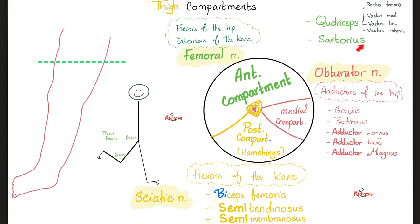The quadriceps and sartorius muscles are supplied by the femoral nerve. Gracilis, pectineus, adductor longus, adductor brevis, and adductor magnus are supplied by the obturator nerve. Biceps femoris, semitendinosus, and semimembranosus are supplied by the sciatic nerve. Easy peasy, lemon squeezy. Anatomy makes sense if explained properly.